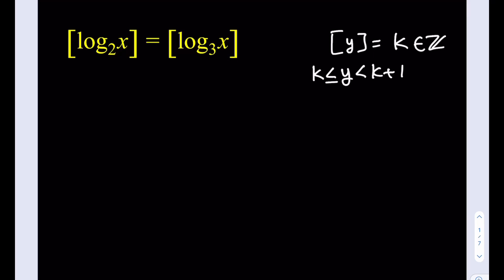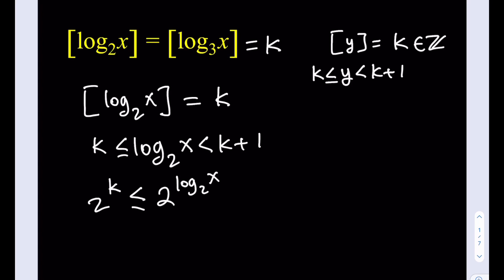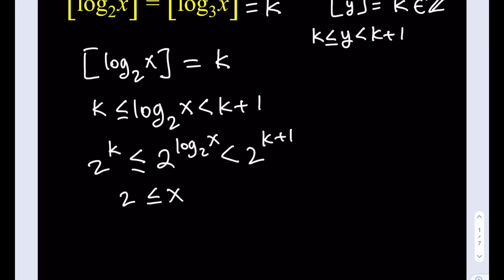So what we're going to do to solve this problem is use substitution. We set both sides equal to k. For the floor of log base 2 of x equal to k, log base 2 of x is between k and k plus 1, where k is an integer. Raising 2 to each part gives us 2 to the k is less than or equal to x, which is less than 2 to the k plus 1.